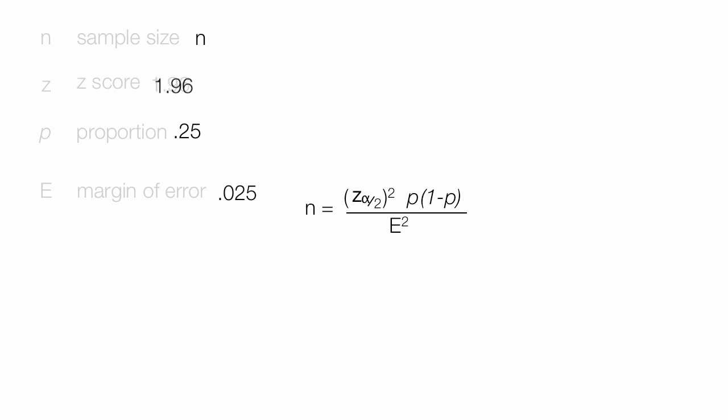Now, I take 1.96 and I square it, like that, times 0.25, which is my proportion, times 1 minus 0.25, all divided by the margin of error squared. Don't forget to square this when you do these calculations. Don't forget to square the margin of error.